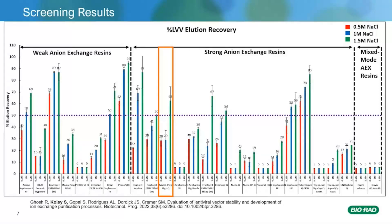The current slide shows the plot of the percent lentiviral recovery from the elution step. As can be seen from the figure, few chromatographic resins could cross the target blue dotted line and successfully provide greater than 50% lentiviral recovery in the elution step. I would like to emphasize that MacroPrep HiQ was also observed to be one of the resins that provided greater than 50% elution recovery and hence was selected for the next level of high-throughput screening.